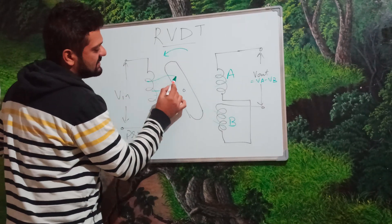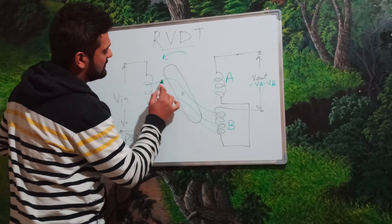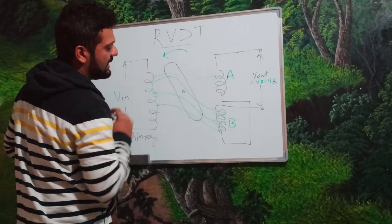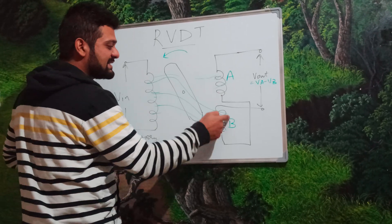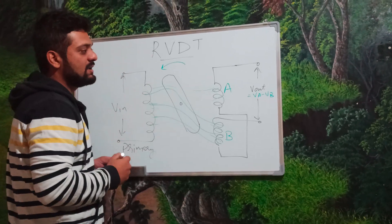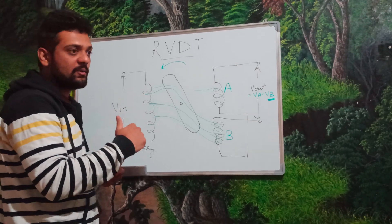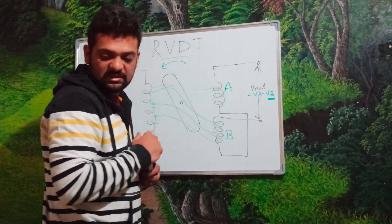Now, more of the flux lines, the magnetic flux lines, will try and connect with B compared to A. Since more flux lines, magnetic flux lines, are connecting with B compared to A, our V B would be on a higher side compared to V A, giving us the negative voltage.